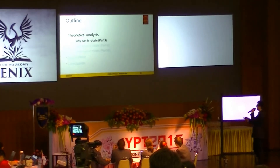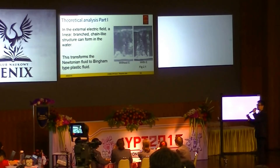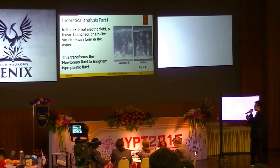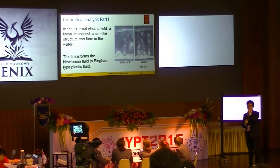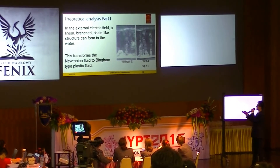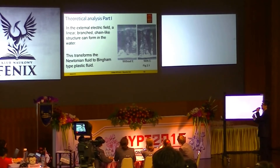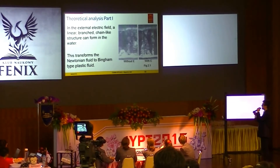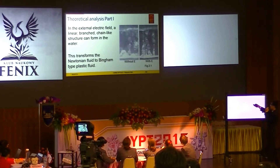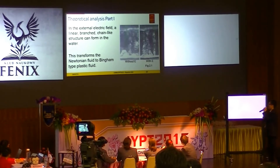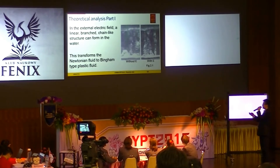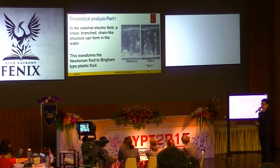Why can it rotate? Since I apply an external electric field, based on the IYPT 2012 problem of the floating water bridge, it is implied that in an external electric field, a linear chain-like structure can form in the water. You can see these chain-like structures in this picture. This transforms the Newtonian fluid into a BNM-type plastic fluid, and all of my theory is based on this BNM-type plastic fluid.